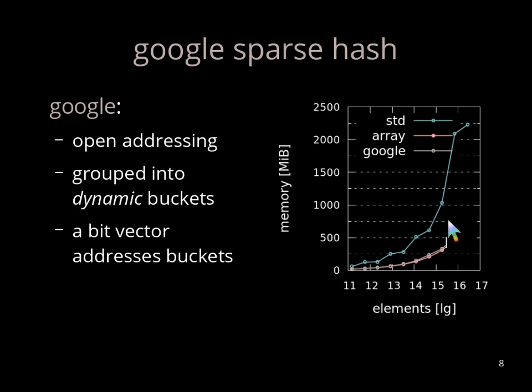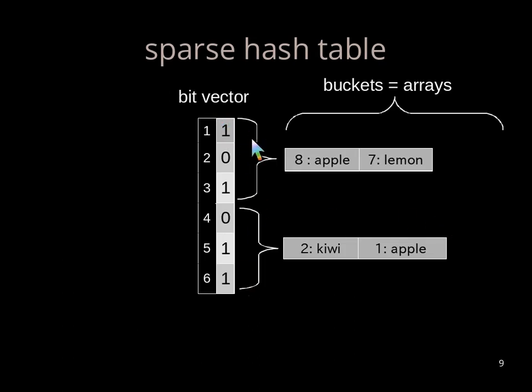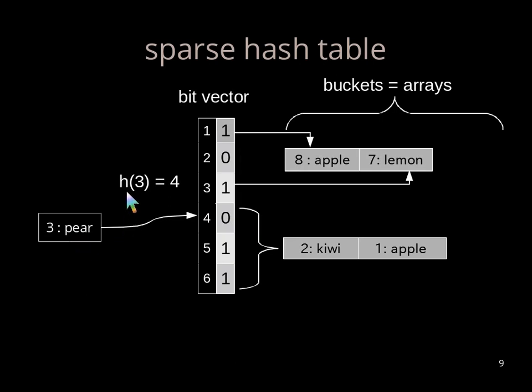In detail, it consists of a bit vector split into regions and each region is assigned to a bucket. And each one in a region corresponds to an element in the bucket. For instance, this one corresponds to 8 apple and this one to 7 lemon. Now suppose we want to insert a new element, 3 pear. Then the hash function, for instance, assigns this element to position 4. There is a zero. We change this zero to 1, and this one corresponds to the first entry of this bucket. So it gets this shape.